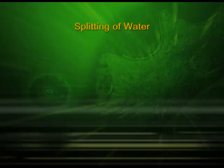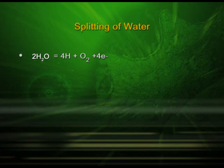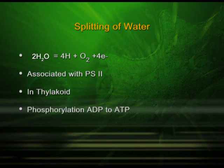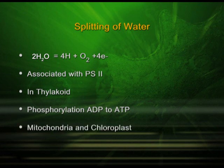Splitting of water is not only providing oxygen to be released, it is also providing electrons so that the system of photosynthesis continues in the plant. As you can see in the slide, 2H2O gives 4 hydrogen, oxygen, and 4 electrons. This splitting of water system is associated with PS2, because PS2 has the reaction center and electrons are produced initially there. It is located in the thylakoid and helps in phosphorylation — that is, conversion of ADP to ATP. ATP is the source of energy, and this is happening in the chloroplast.